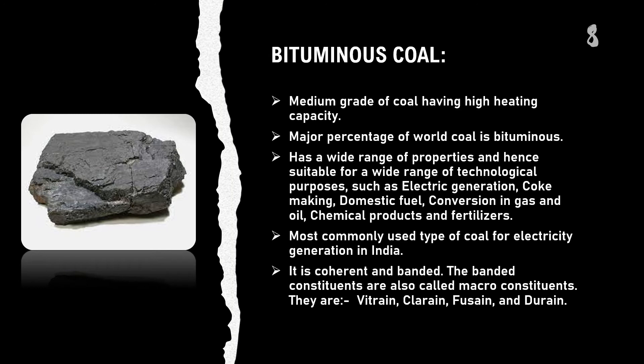Next, bituminous coal. It is a medium grade of coal having high heating capacity, and the major percentage of world coal is bituminous. It has a wide range of properties and is hence suitable for a wide range of technological purposes such as electric generation, coke making, domestic fuel, conversion to gas and oil, chemical products, and fertilizers. It is the most commonly used type of coal for electricity generation in India, with most bituminous coal found in Jharkhand, Orissa, West Bengal, Chhattisgarh, and Madhya Pradesh. It is coherent and banded; the banded constituents, also called macro constituents, are vitrinite, clarite, fusainite, and durite.